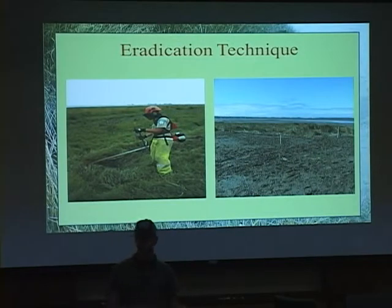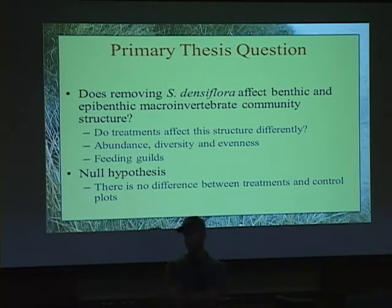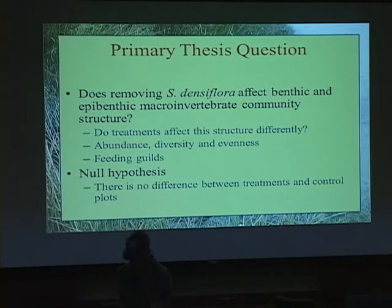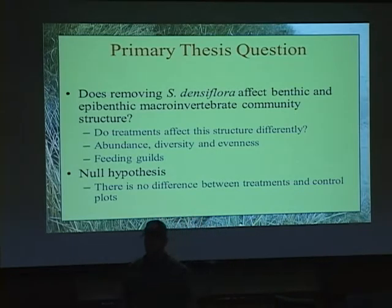There's a picture of the eradication technique before and after. So the primary thesis question — Andrea contacted my advisor Sean Craig looking for somebody to volunteer — was basically asking: does removing Spartina densiflora affect the benthic and epibenthic macroinvertebrate community structure? I'm looking into whether the treatments affect this structure differently. For example, do control and light grind have a different response than deep grind, or any combination thereof? I'll be measuring these variables in terms of probably genera, abundance, diversity, and evenness.